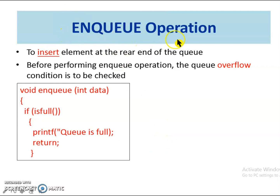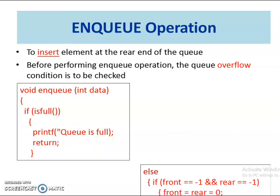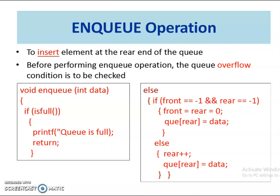Next, we will discuss the two important operations in the queue: enqueue and dequeue. The enqueue function is used to insert the element at the rear end of the queue. The enqueue function invokes the isFull function to check whether the queue is full or not, because elements can be inserted only when the queue is not full. When inserting an element, there are two possibilities: the queue may be empty and what we insert is the first element, or the queue may contain some elements. To insert the first element, set front equal to rear equal to 0 and insert the data at queue[rear]. To insert other elements, increment the rear index and insert the data at queue[rear].